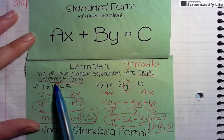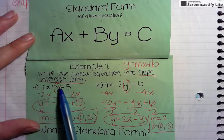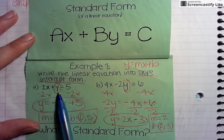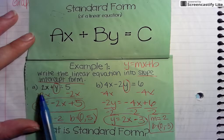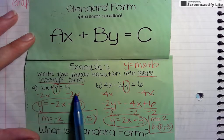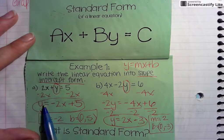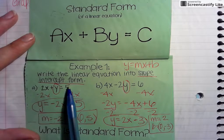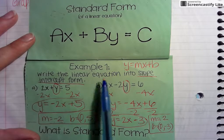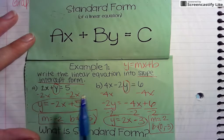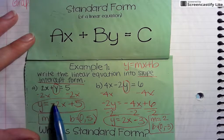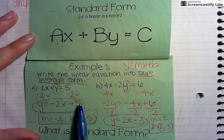What you're going to do is you always want to circle your y — what you're trying to get by itself. Now what's in its way is that you want to subtract 2x on both sides, so you bring down: y equals 5 minus 2x. And if you notice, we want to get into mx plus b, so we want to put the negative 2x plus 5.